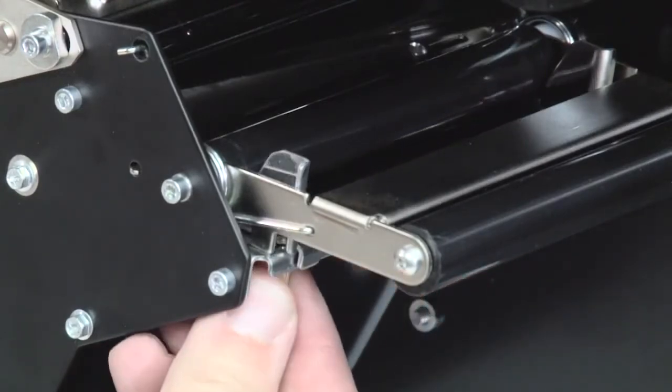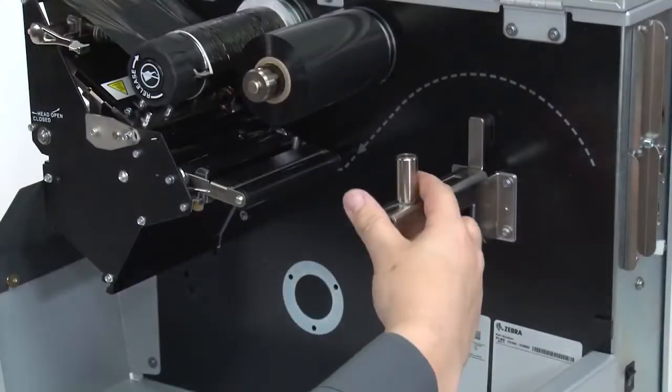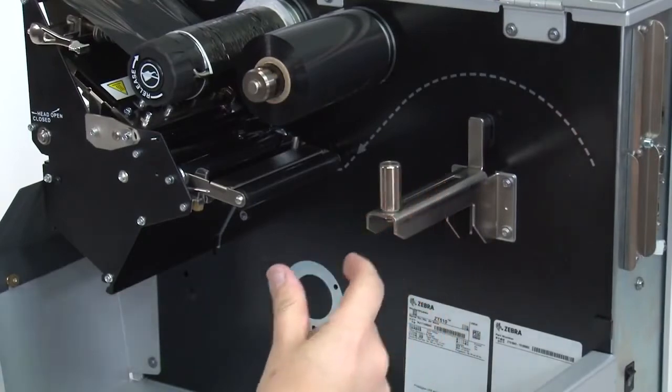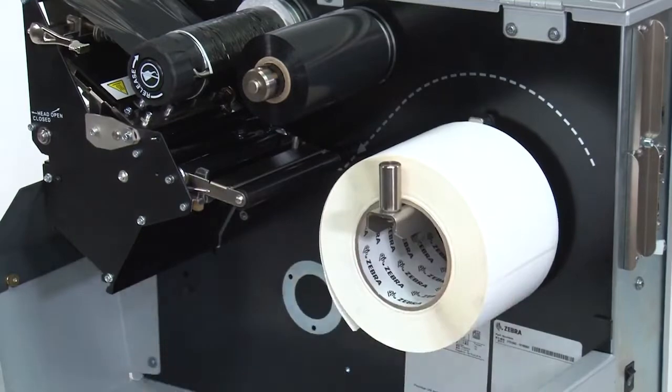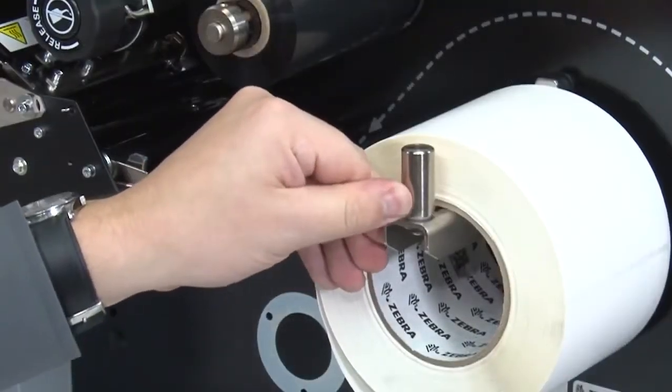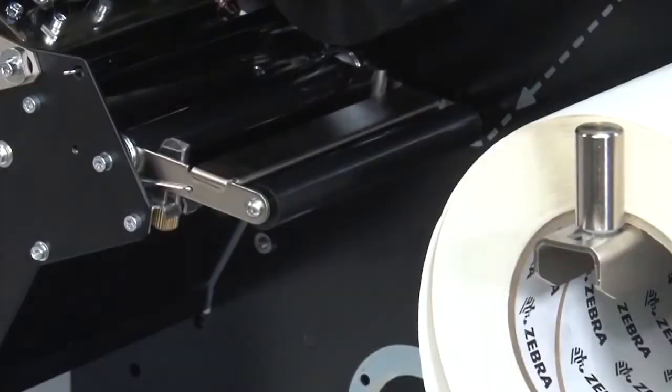Slide out the media supply guide. Place the roll of media on the media supply hanger and push it back. Slide in the media supply guide until it touches the media.